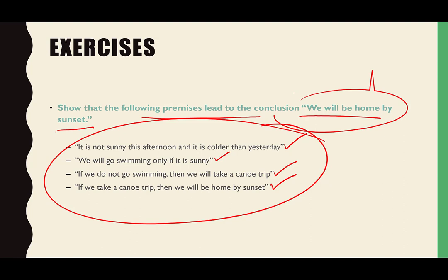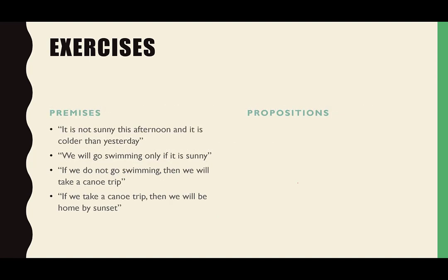We turn it into formulas and start manipulating with De Morgan's Law and rules of inference. The propositions are: P is 'it is sunny this afternoon,' Q is 'it is colder than yesterday,' R is 'we will go swimming,' S is 'we will take a canoe trip,' T is 'we will be home by sunset.'